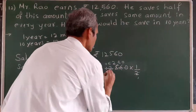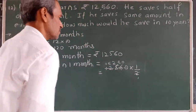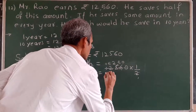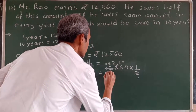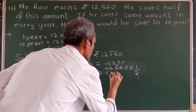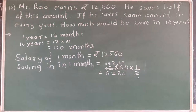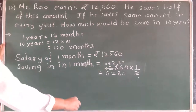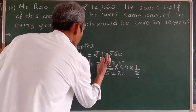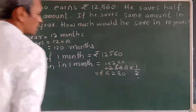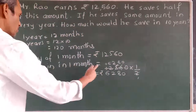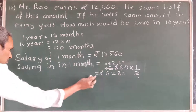So the result is 6,280. Rupees 6,280 is the saving in 1 month. Now what we got — rupees 6,280 is the saving in 1 month.